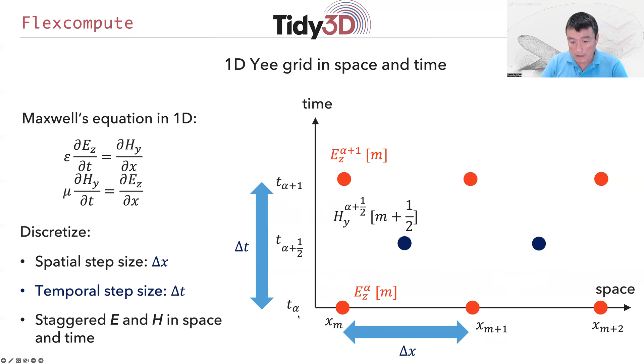At a particular time step, knowing the electric field, half a time step later we use that to update the magnetic field and repeat the process. The spatial step size is Δx and the temporal step size is Δt. The time stepping process looks like this.